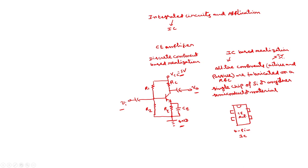These are the two realizations: discrete component-based and IC-based. IC is defined as a circuit in which all components — both active and passive — are fabricated on a single chip of either silicon or any other semiconductor material.